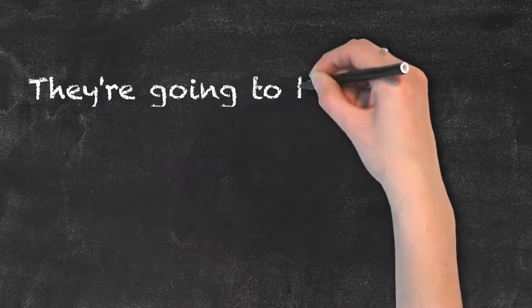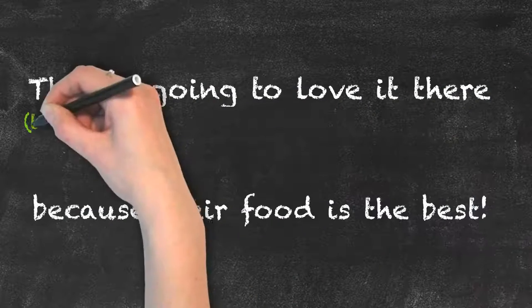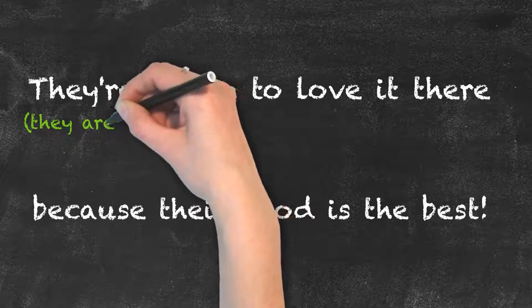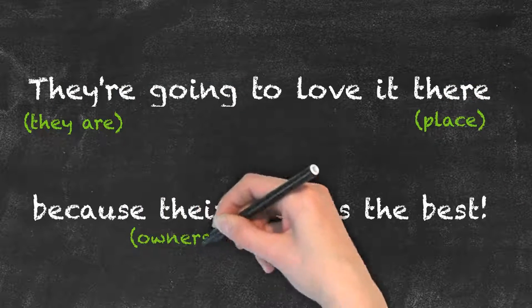Let's take a look at this example sentence. They're going to love it there because their food is the best. They're is the contracted form of they are. There stands for the place and their indicates ownership.